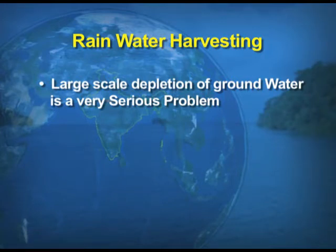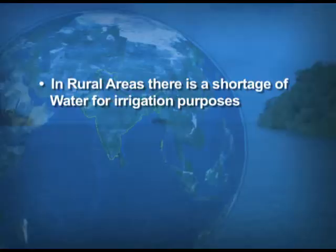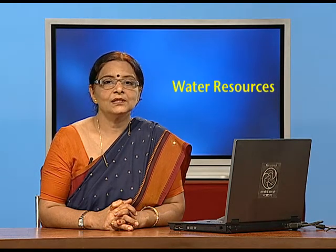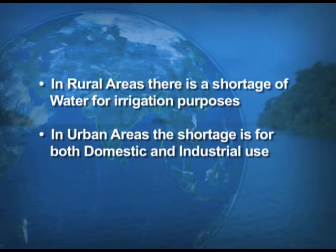Now another concept is rainwater harvesting. The large-scale depletion of groundwater is a very serious problem. Rainwater harvesting is a technique of increasing the recharge of groundwater by capturing and storing rainwater locally to meet household needs. Groundwater is essentially rainwater that percolates through the ground, through pores and rocks. In rural areas there is a shortage of water for irrigation, and in urban areas there is a shortage for both domestic and industrial purposes.